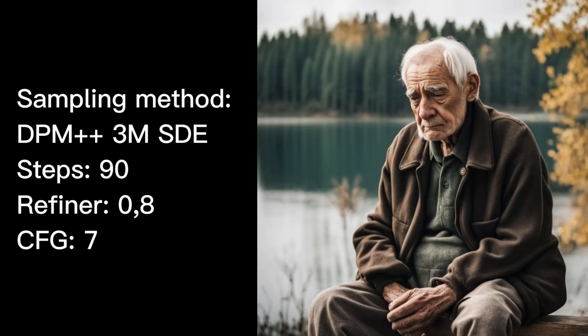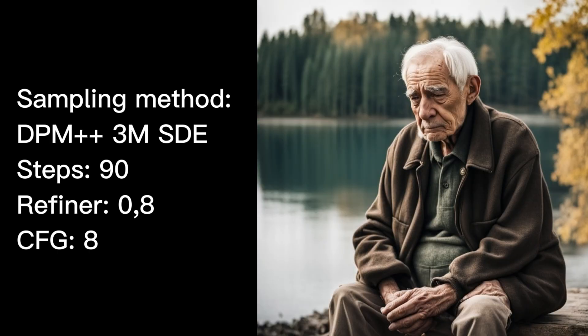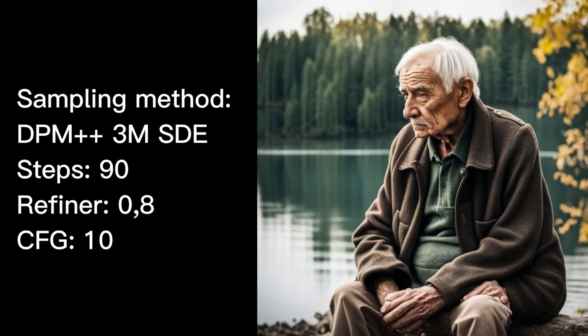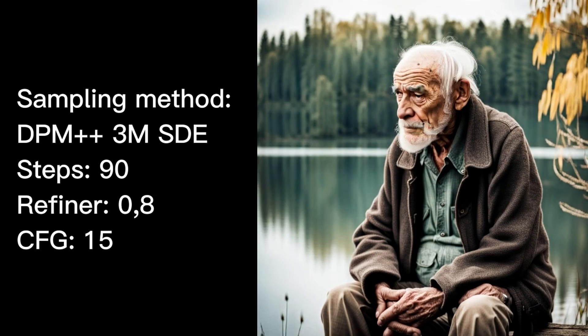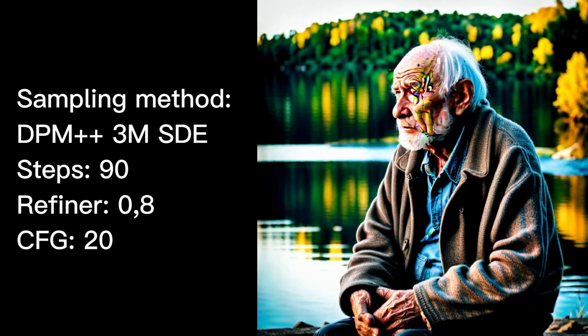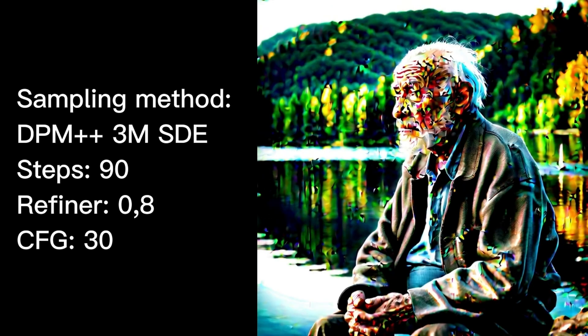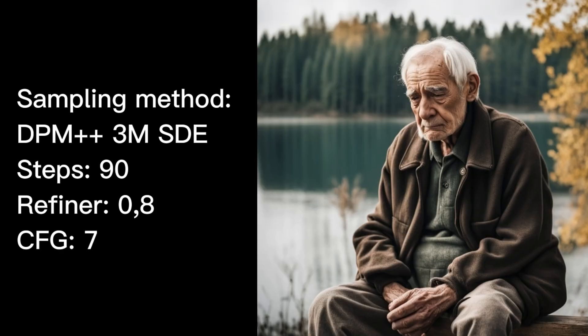The last thing left to test is CFG. I'll start with a value of 1 and gradually increase it, checking each subsequent value especially in the range most commonly used, and other times skipping by increments of 5. As we can observe, high values introduce strong distortions. Among the lower values, I decided to stick with 7, which was our base value from the beginning.